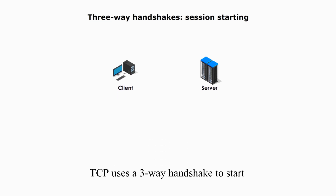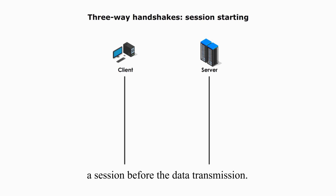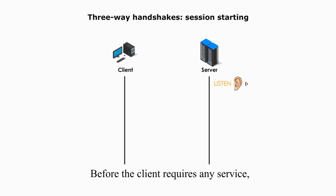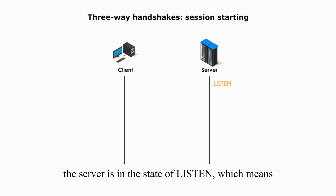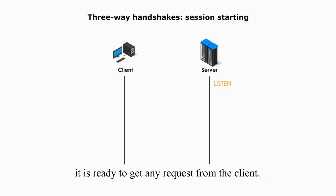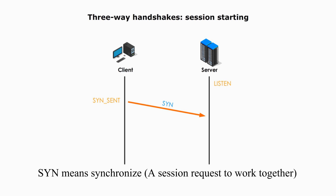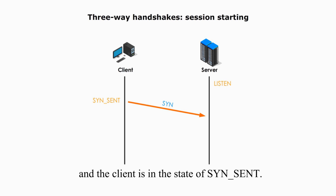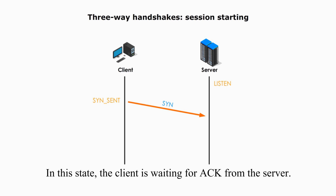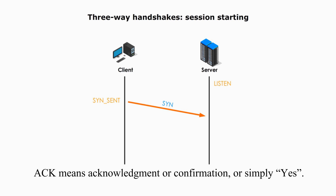TCP uses a three-way handshake to start a session before data transmission. Before the client requires any service, the server is in the LISTEN state, which means it's ready to accept any request from the client. The client sends a SYN to ask for a session — SYN means synchronize — and the client is in the state of SYN-SENT. In this state, the client is waiting for ACK from the server. ACK means acknowledgement, or simply yes.